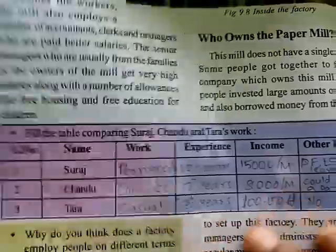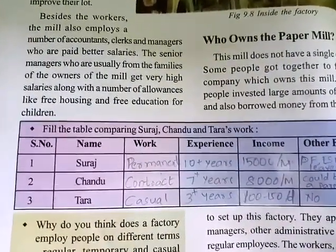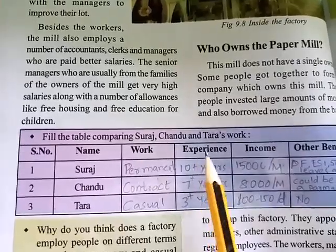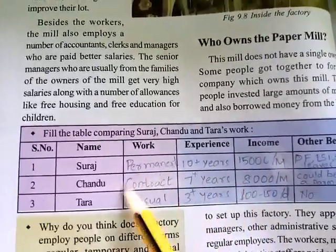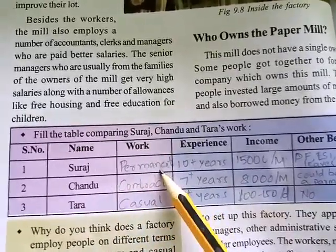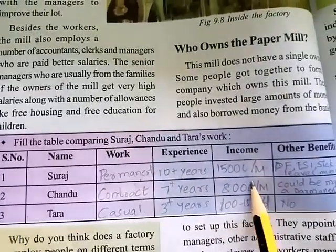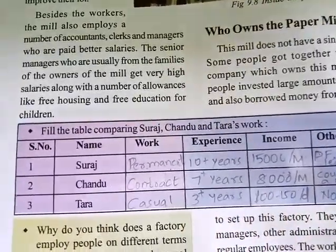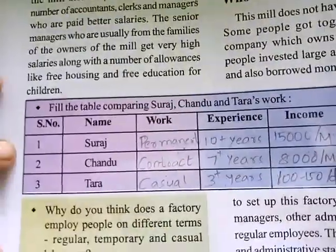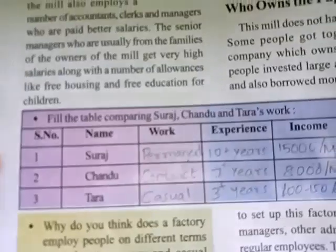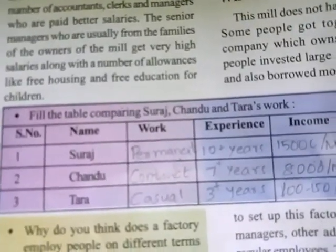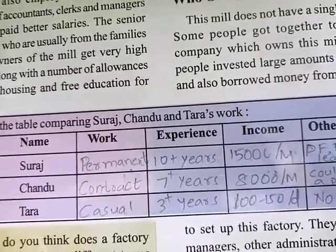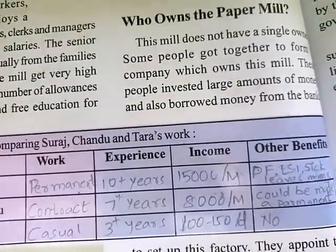There is another table about different types of workers — permanent workers, contract workers, and casual workers. The textbook gives examples of Suraj, Chandu, and Tara. We need to fill in type of work, experience, income, and benefits for each. Suraj is a permanent worker in the paper mill. His experience is 10 plus years. He gets 15,000 rupees per month and receives many benefits.